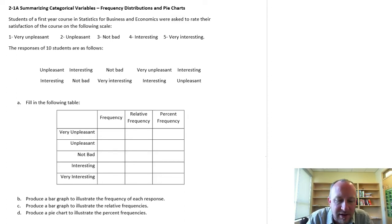This next problem is looking at summarizing categorical variables. Specifically we're going to put together a frequency distribution and then a pie chart. I'm going to produce a second video for the pie chart just to try to keep these as short as possible. In this exercise we're looking at student responses to a survey on their preferences towards their statistics for business and economics course.